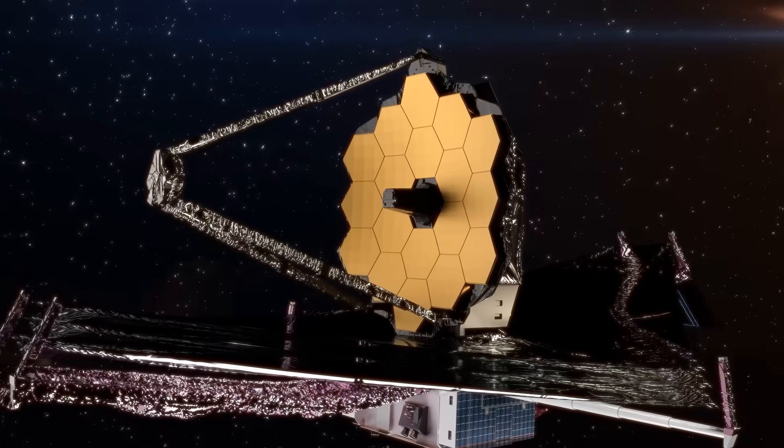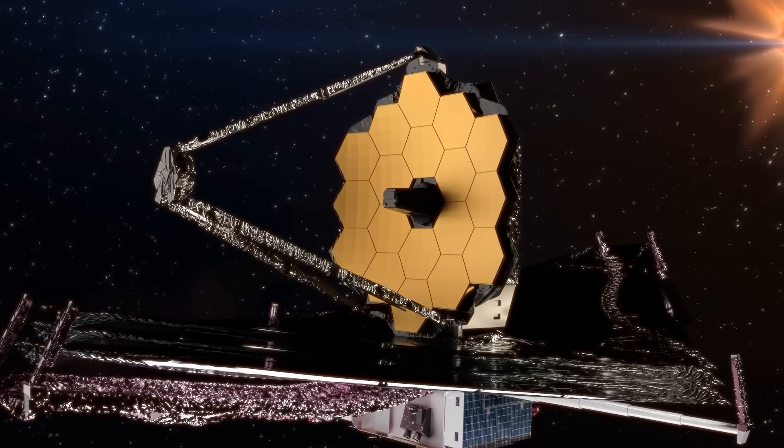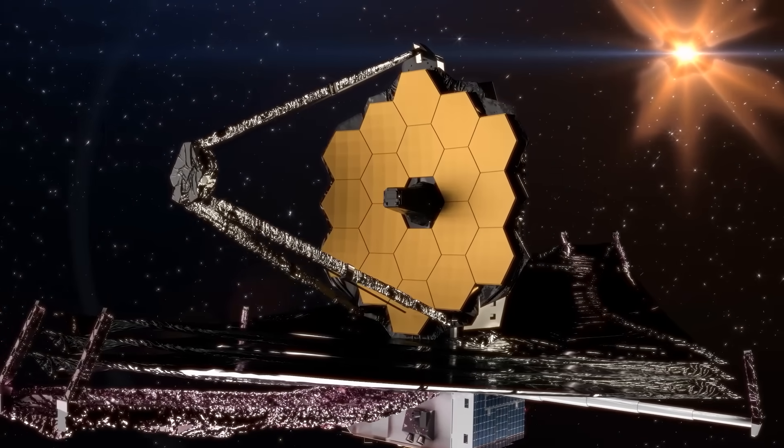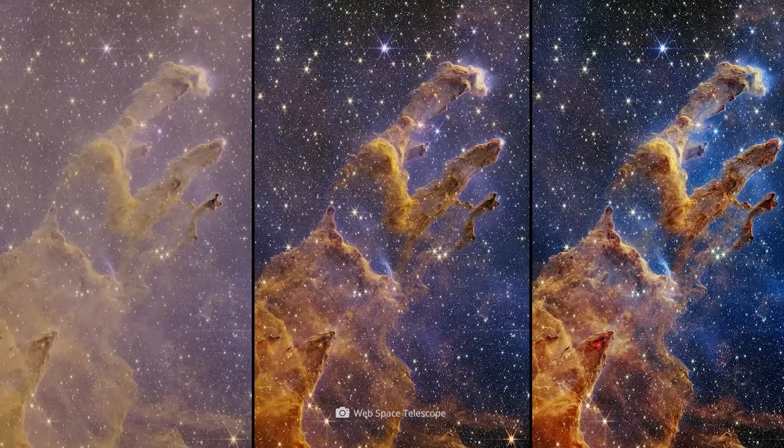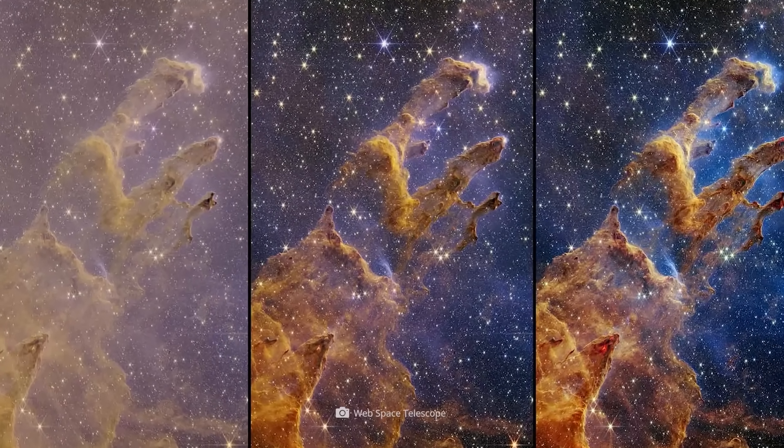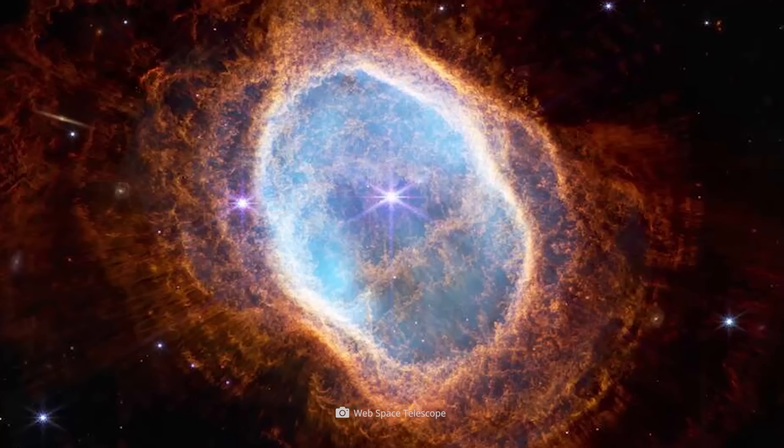The James Webb Telescope has detected a series of mysterious structures that show that our previous assumptions about cosmic evolution were wrong. In fact, Webb's discoveries are so blatantly at odds with our established ideas that, strictly speaking, they shouldn't even exist.